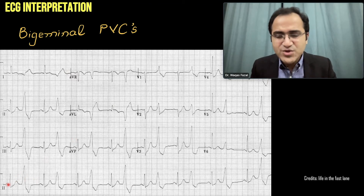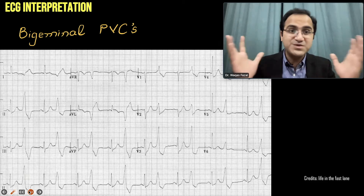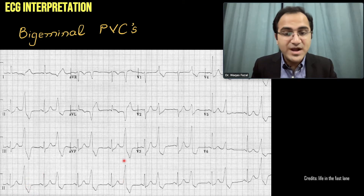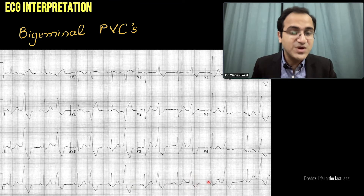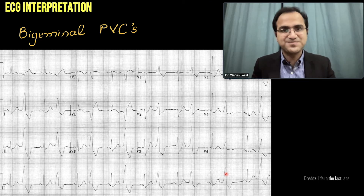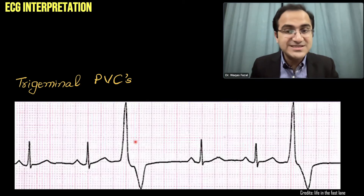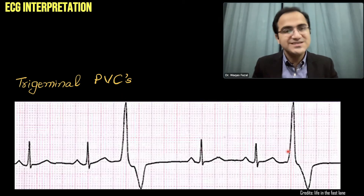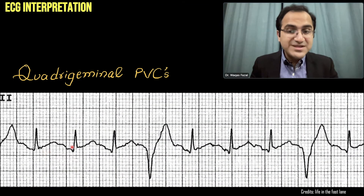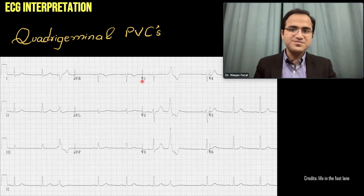In a bigeminal PVC ECG, the normal sinus beat has a sharp narrow QRS complex — less than three small boxes — and is followed by a huge wide bizarre QRS complex with an inverted T wave. After every two sinus beats, if there is a third PVC, that is called a trigeminal PVC. If after every three sinus beats there is a PVC, that is called a quadrigeminal PVC.